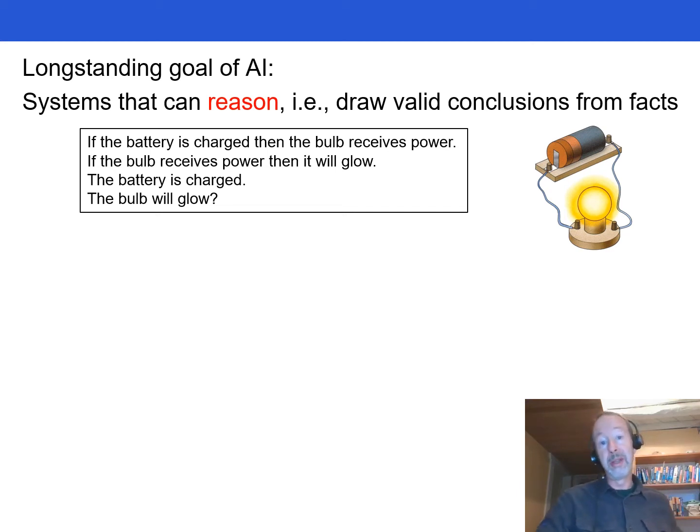For example, consider the following facts and rules in English. If a battery is charged, then the bulb receives power. If the bulb receives power, then it'll glow. The battery is charged. Is it true that the bulb will glow?